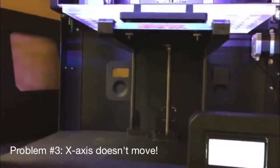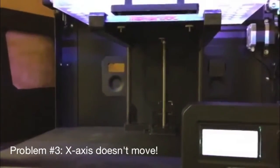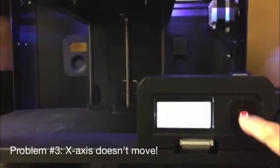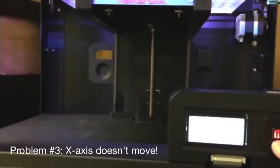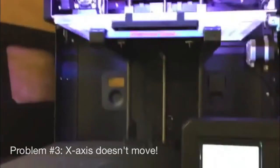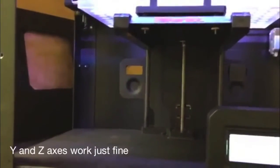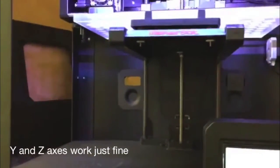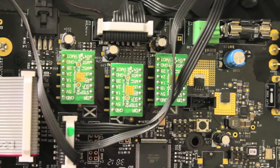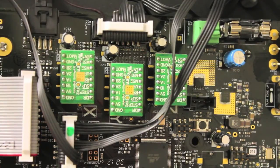This is me trying to jog on the X axis, and you can notice nothing happens. If I go to Y, that works fine. I've switched the bot steps on the Mighty Board.